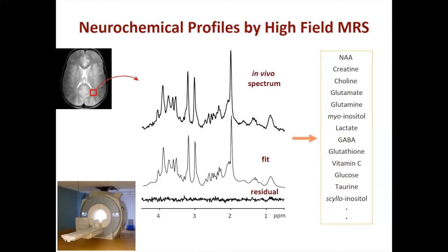At high and ultra-high fields, we have access to a list of up to 20 neurochemicals depending on the volume of interest, the size of the VOI, as well as the field strength. At lower field, this list includes NAA, creatine, choline, perhaps myoinositol, and lactate that can be reliably quantified.